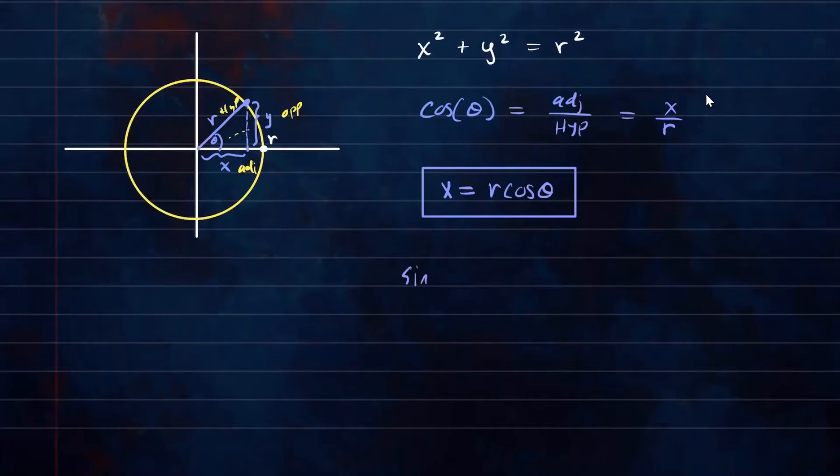Similarly, for sine theta, you can do the same idea. Sine is defined as opposite over hypotenuse. So that would give you opposite is y over r. And then if you solve for y, multiply both sides by r, y is going to be r sine theta.